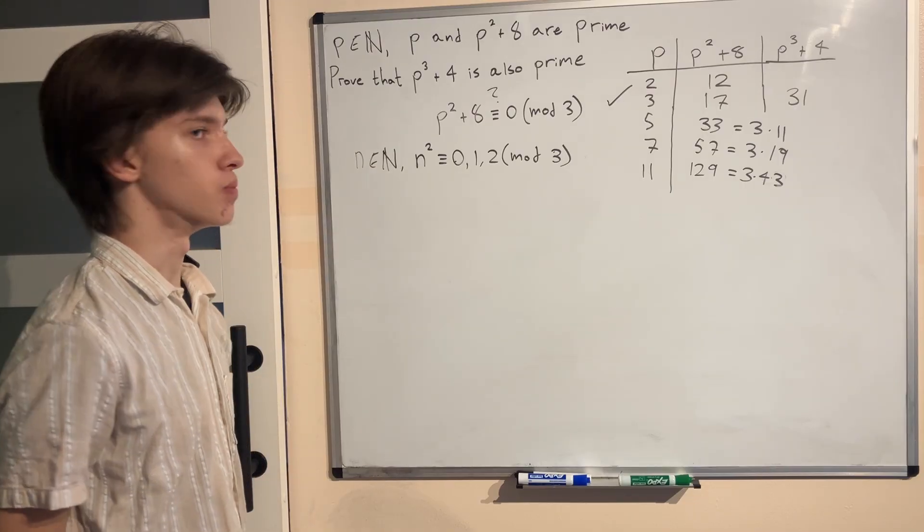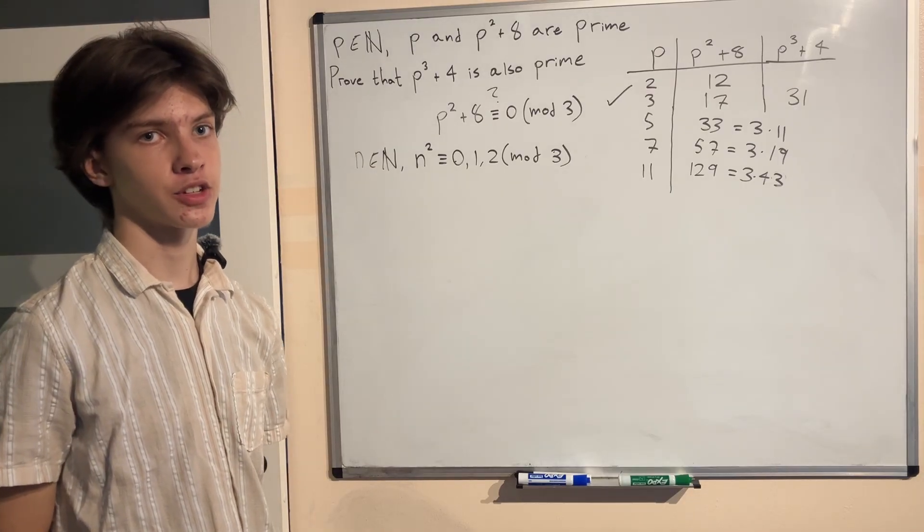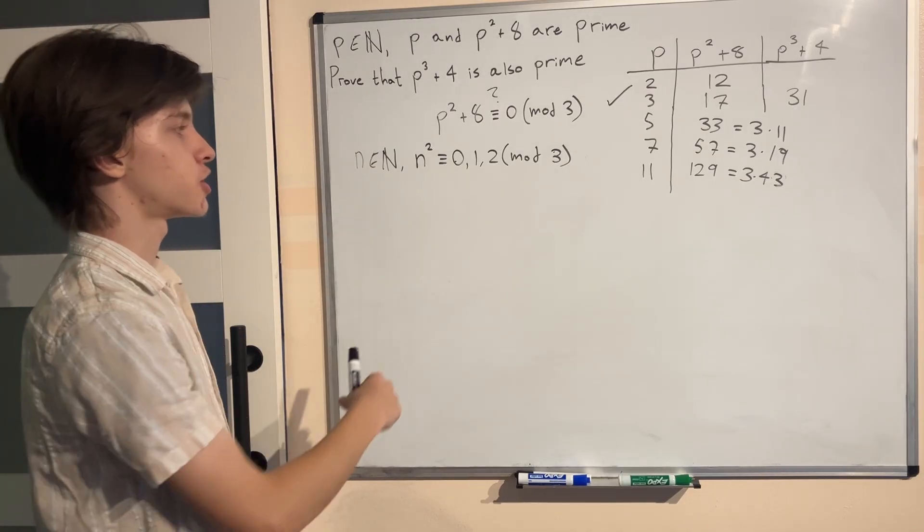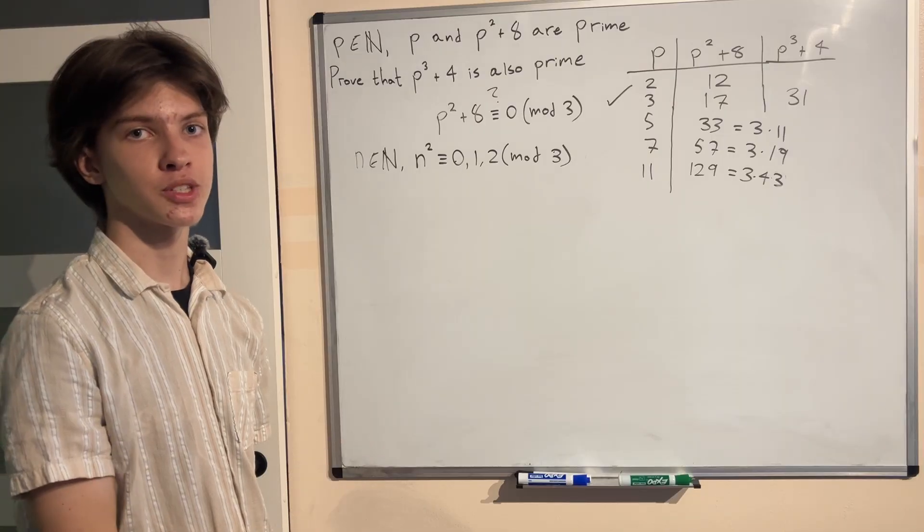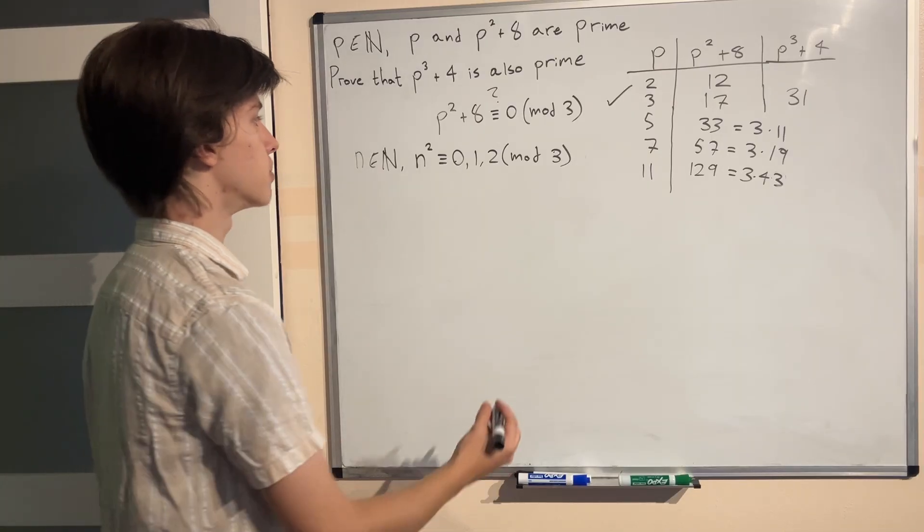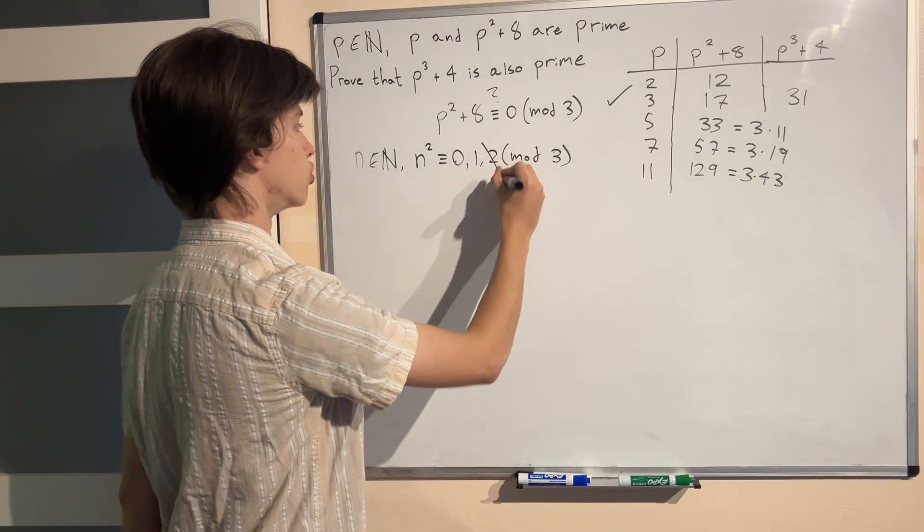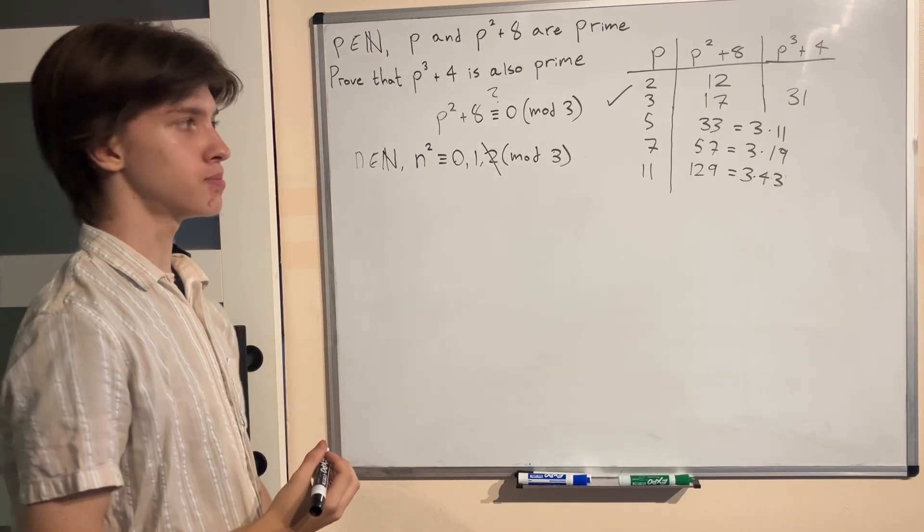Either 0, 1 or 2. But this is in fact not true. When we square any natural number the only possible outcomes are 0 or 1 in mod 3 but never 2. And to see this is actually quite simple.